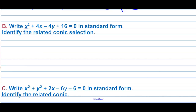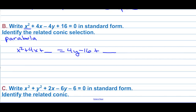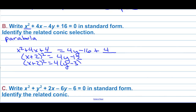Write that equation in standard form and identify the related conic section. Since x is squared but y is not, this must be a parabola. Completing the square on x: x squared plus 4x plus 4 equals 4y minus 16 plus 4. We get (x plus 2) squared equals 4y minus 12, which is (x plus 2) squared equals 4(y minus 3).